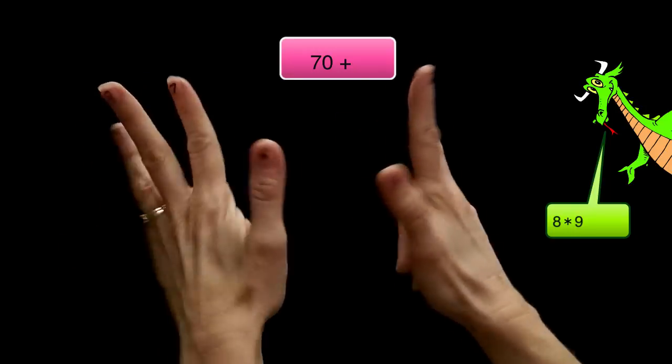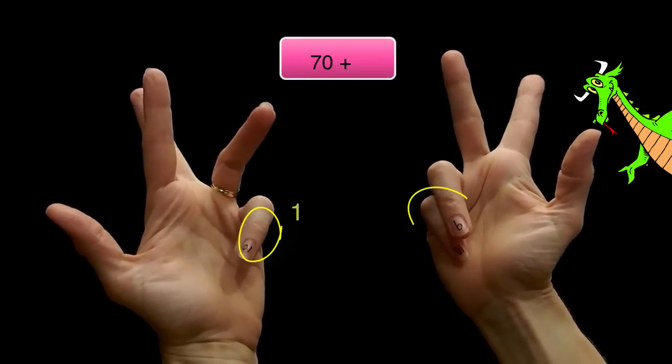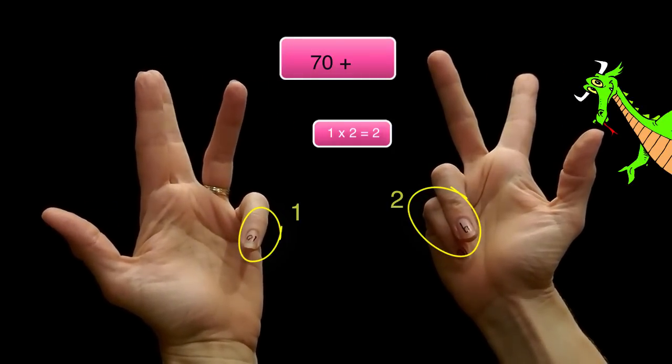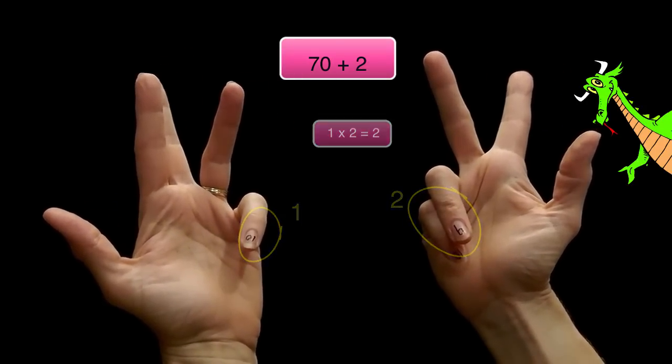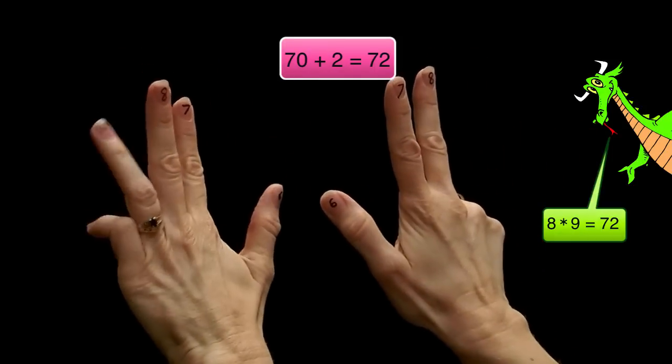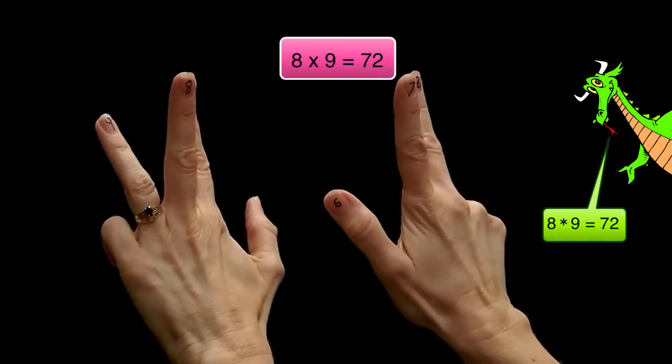Now look at the fingers that are curled down. I have 1 on this hand and 2 on the other. So 1 times 2 is 2. So I add the 70 plus the 2 and get 72. So 8 times 9 is 72.